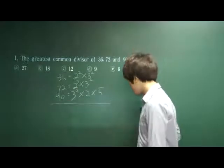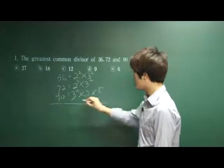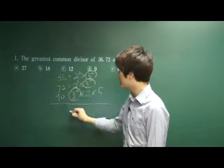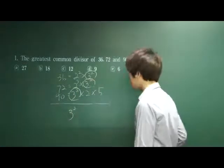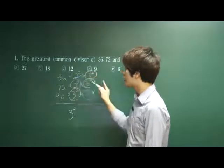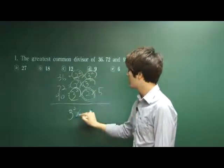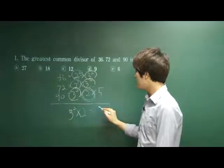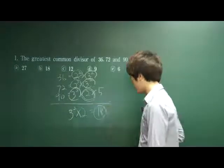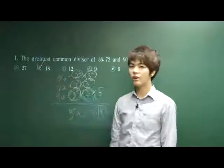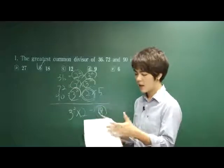Let's find the common factor, which is 3 to the 2nd is everywhere. And I see also 2 is everywhere - just 2, not 2 to the 2nd or 2 to the 3rd, just 2 times 2. This is our greatest common divisor, which is 18. Therefore, the answer got to be 18, B is the correct answer. Easy.